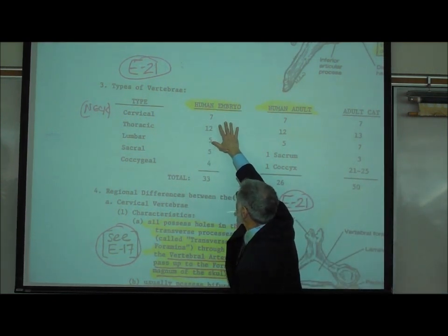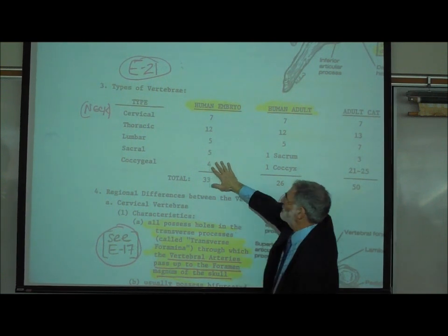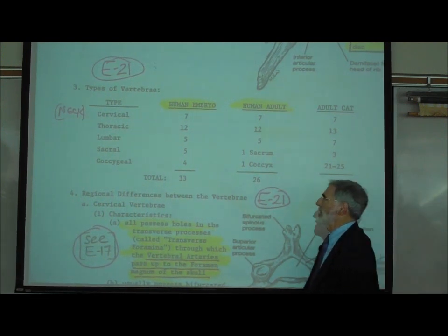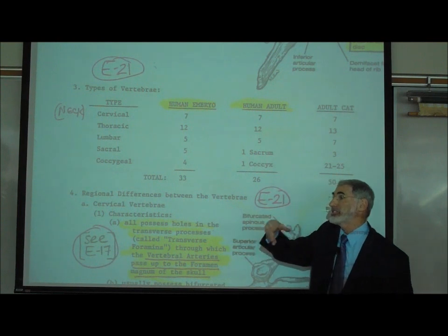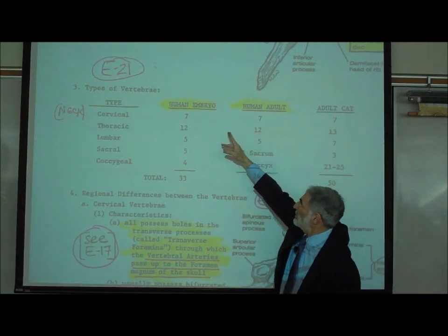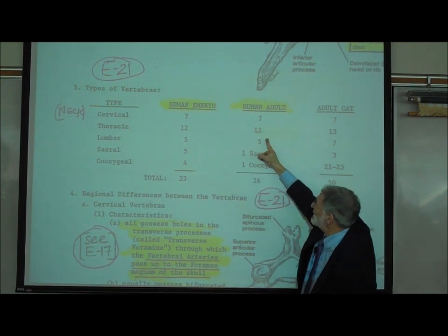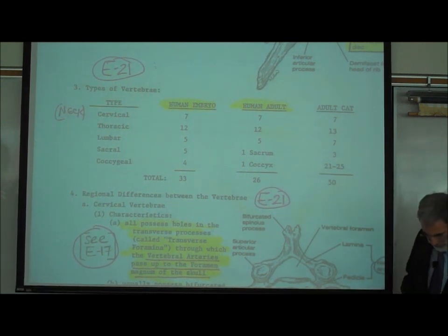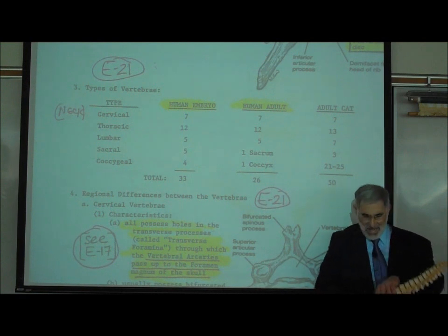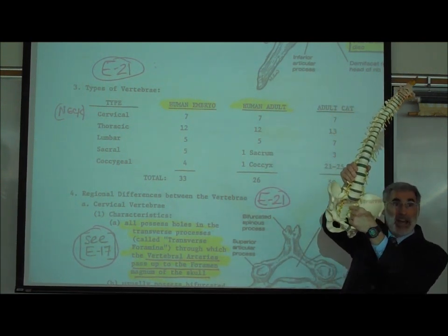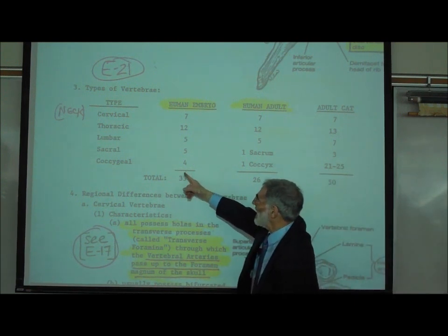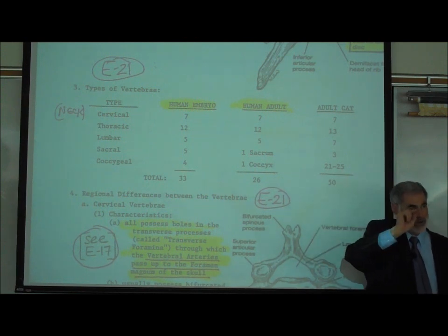There are 7 cervical, 12 thoracic, 5 lumbar, 5 sacral, and 4 coccygeal vertebrae in an embryo. During embryonic development, some fuse together. As adults we still have 7 cervical, 12 thoracic, and 5 lumbar, but the 5 sacral vertebrae fuse to form one large sacrum. The 4 coccygeal tail vertebrae fuse together to form one coccyx.